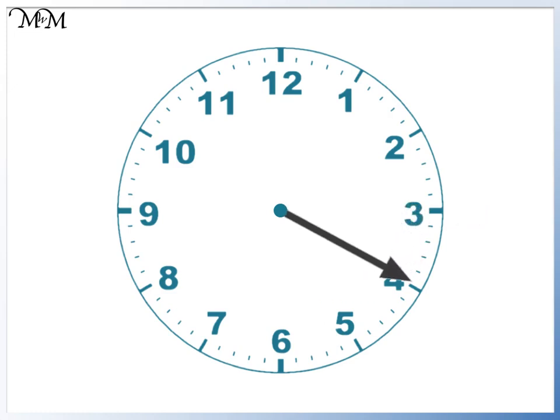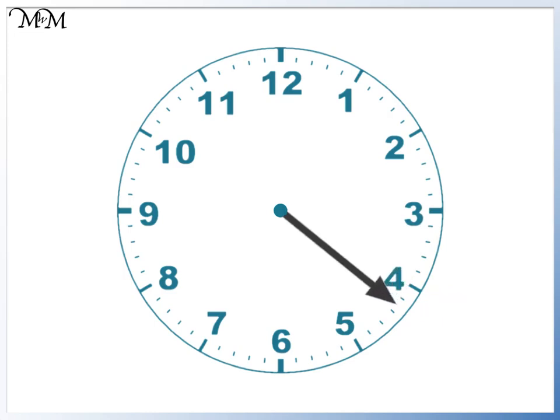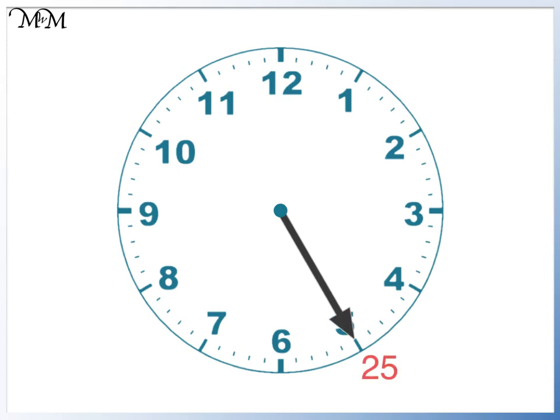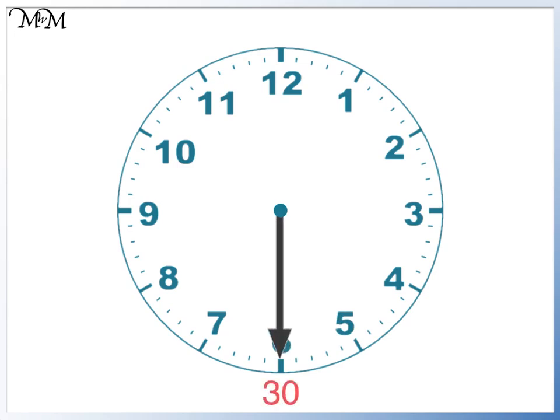4 times 5 equals 20, so 20 minutes past. 5 times 5 equals 25, so 25 minutes past. 6 times 5 equals 30, so 30 minutes past — we call this half past. These are all minutes past the hour.